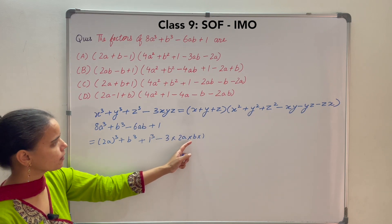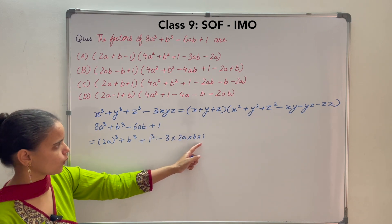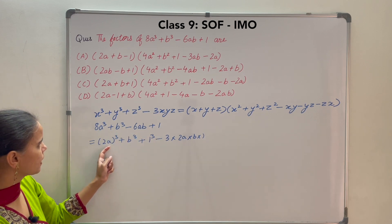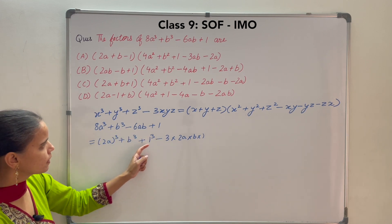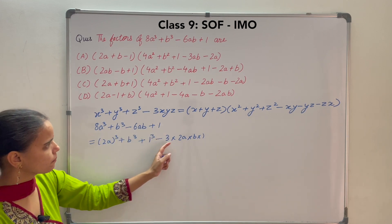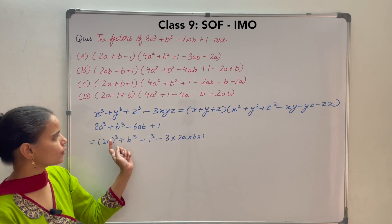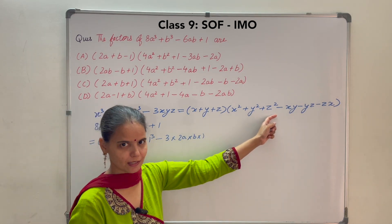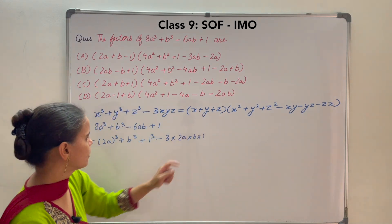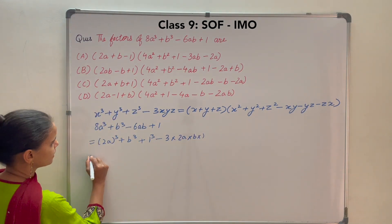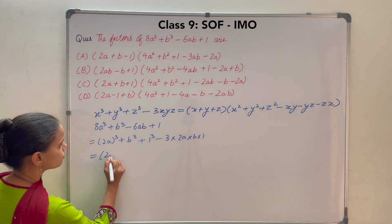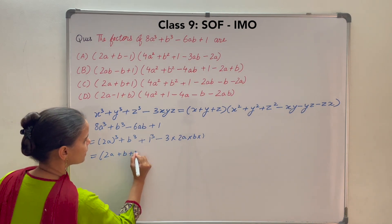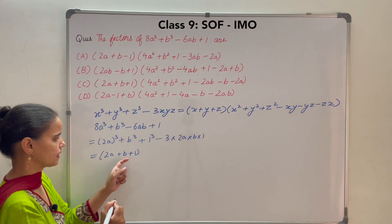With x as 2a, y as b, and z as 1, you will get exactly the same thing: 8a cube plus b cube plus 1 minus 6ab. So using this identity to write the factors, you get 2a plus b plus 1, which is x plus y plus z.